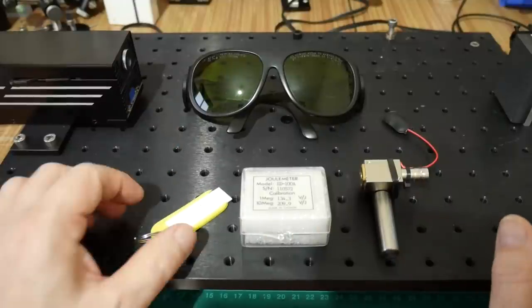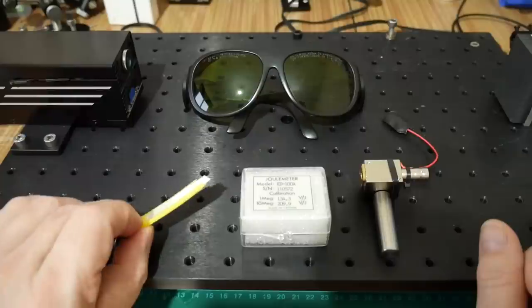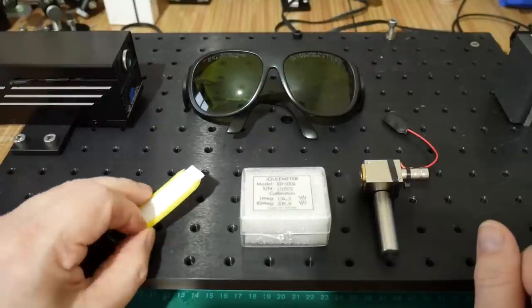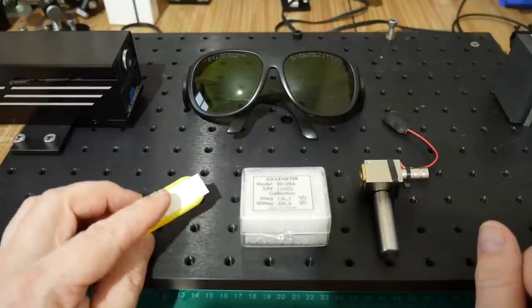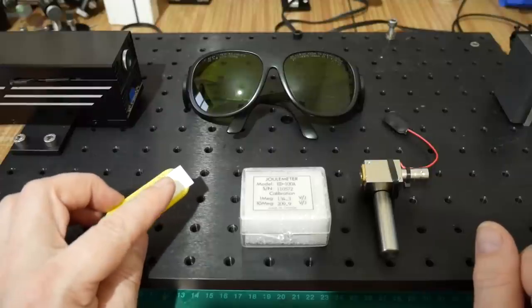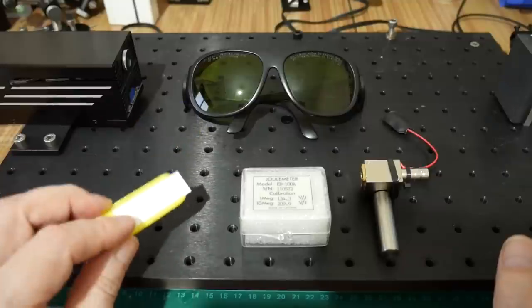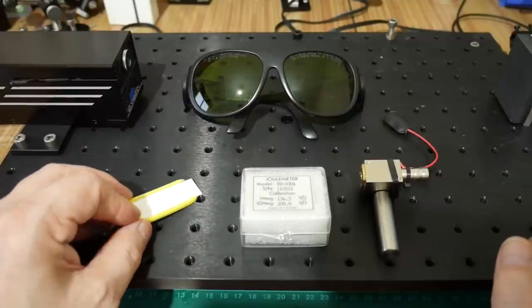At the front here we've got three sensors. The one on the left hand side is an infrared detector card and the idea behind this is you can wave it in front of the infrared beam which is invisible and it will actually show up as a sort of orange yellow spot so you can line the beam up with whatever sensors you've got going on. You can use this with the laser safety glasses as well, it works perfectly fine.